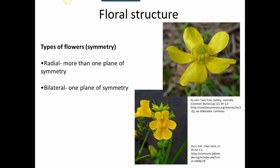Another characteristic important for identification is the kind of symmetry in the flower. The buttercup is an example of a flower with radial symmetry, meaning there is more than one plane of symmetry in the flower head. The monkey flower, on the other hand, has only one plane of symmetry right down the center — a vertical line through the center — which is bilateral symmetry. This is often another key characteristic when identifying wildflowers.